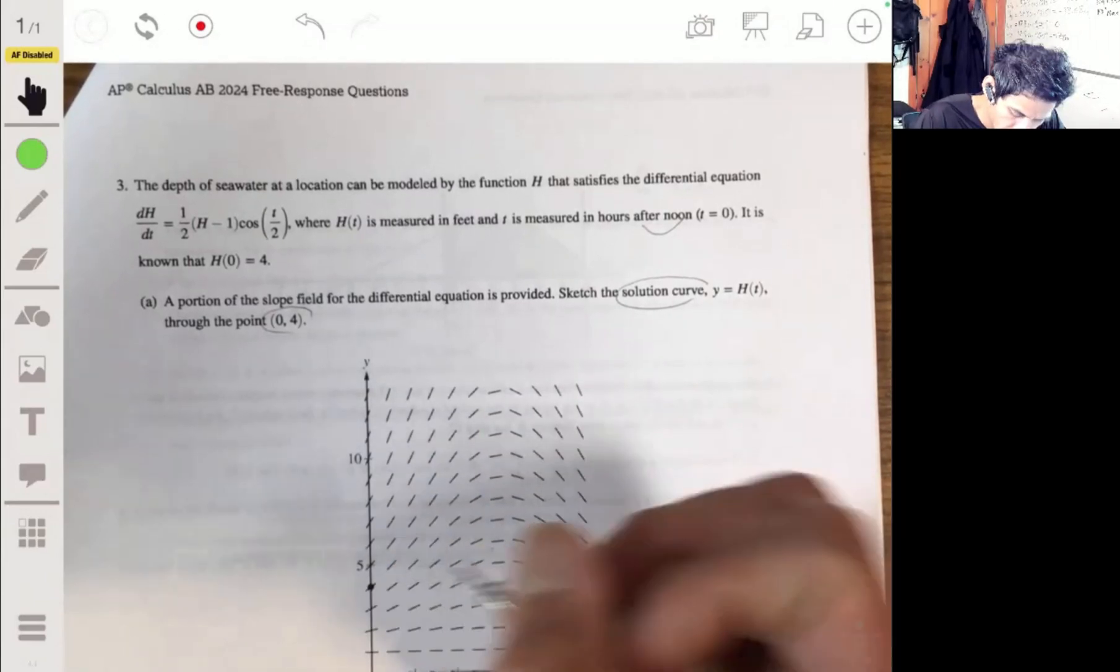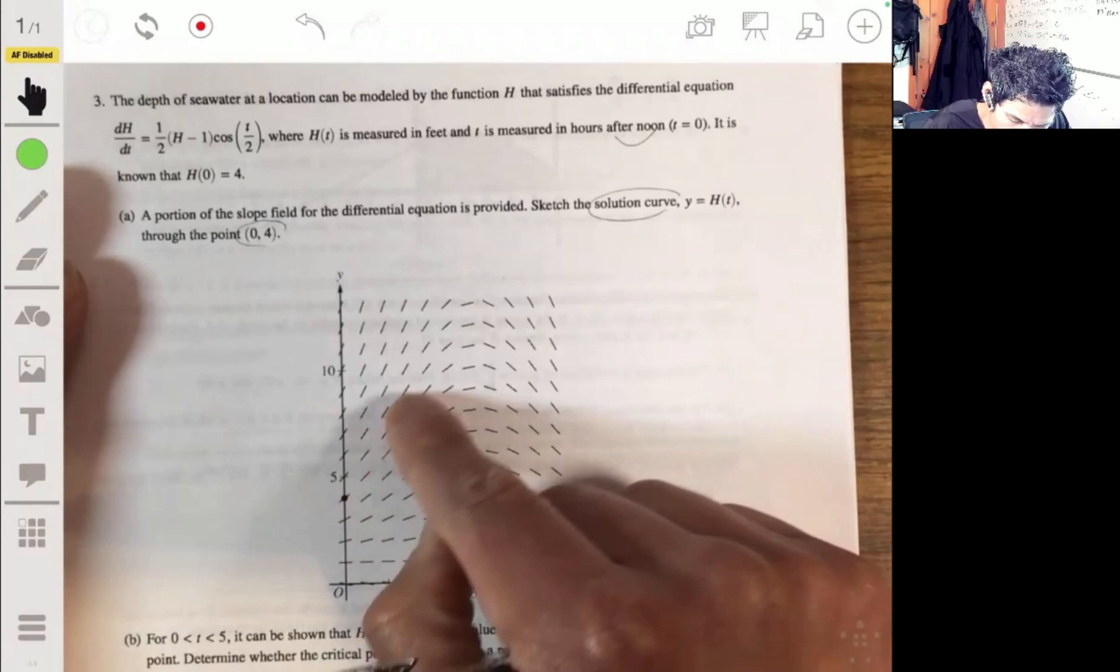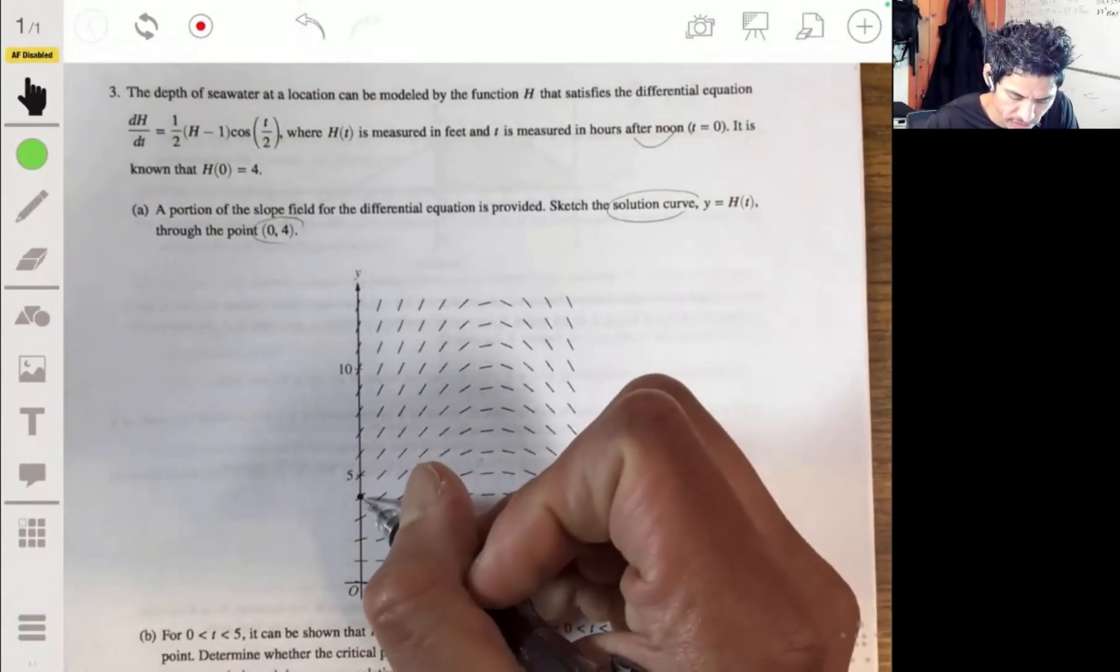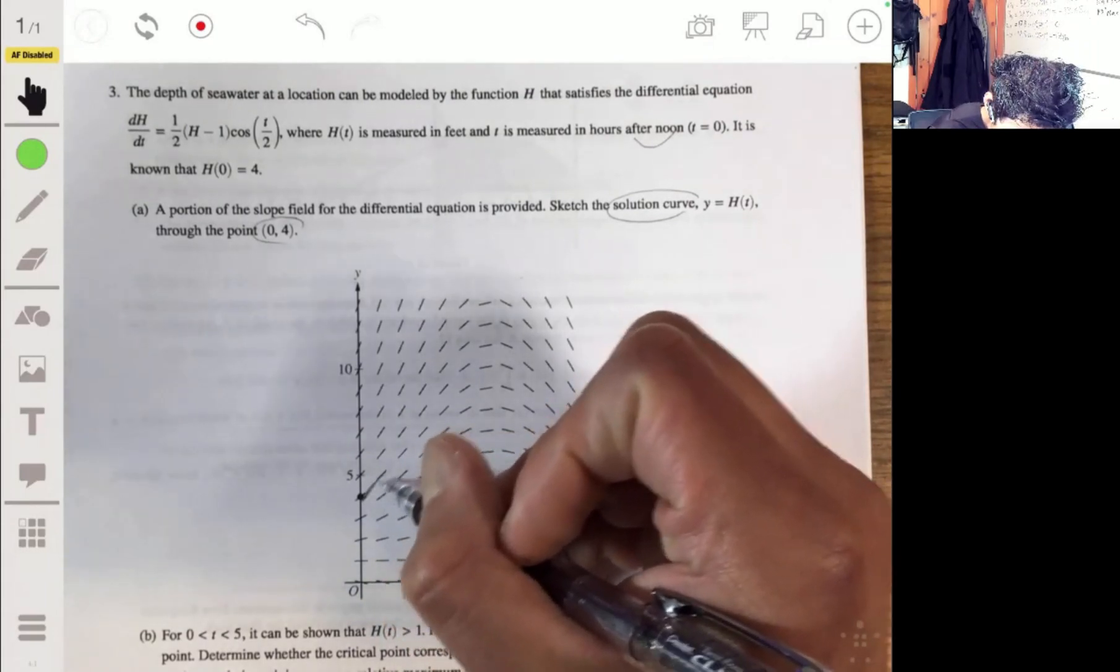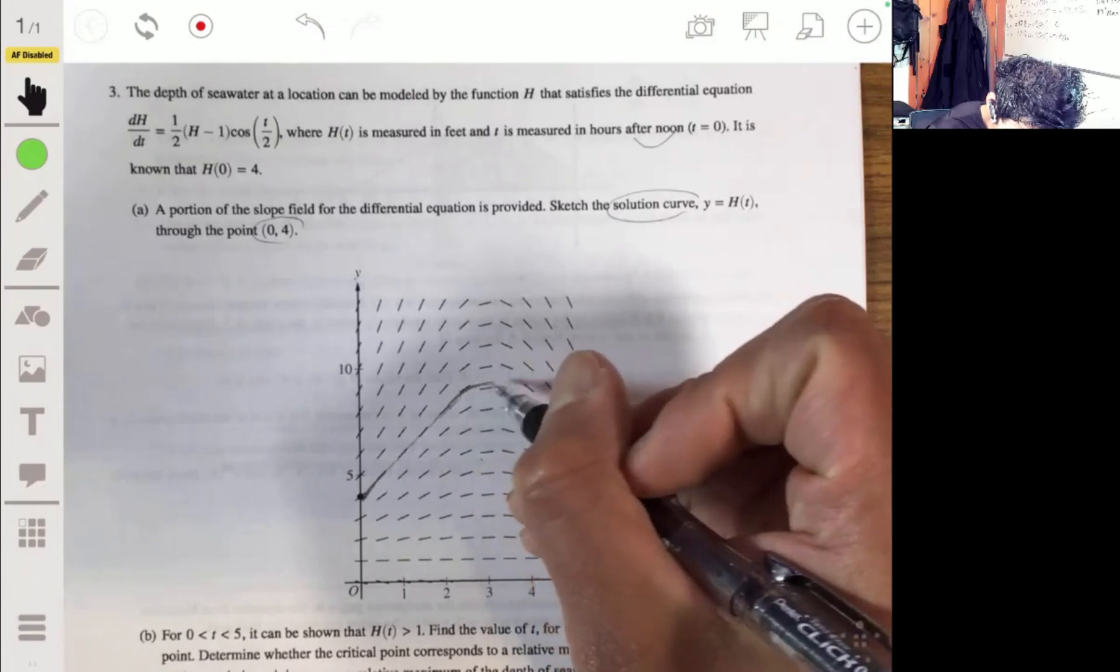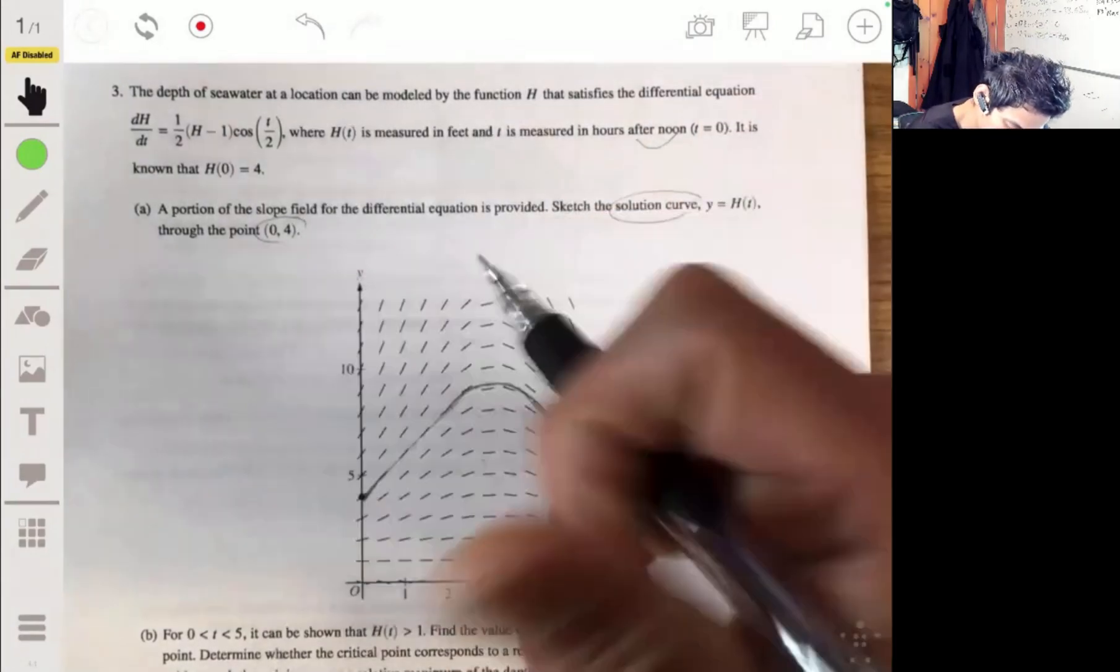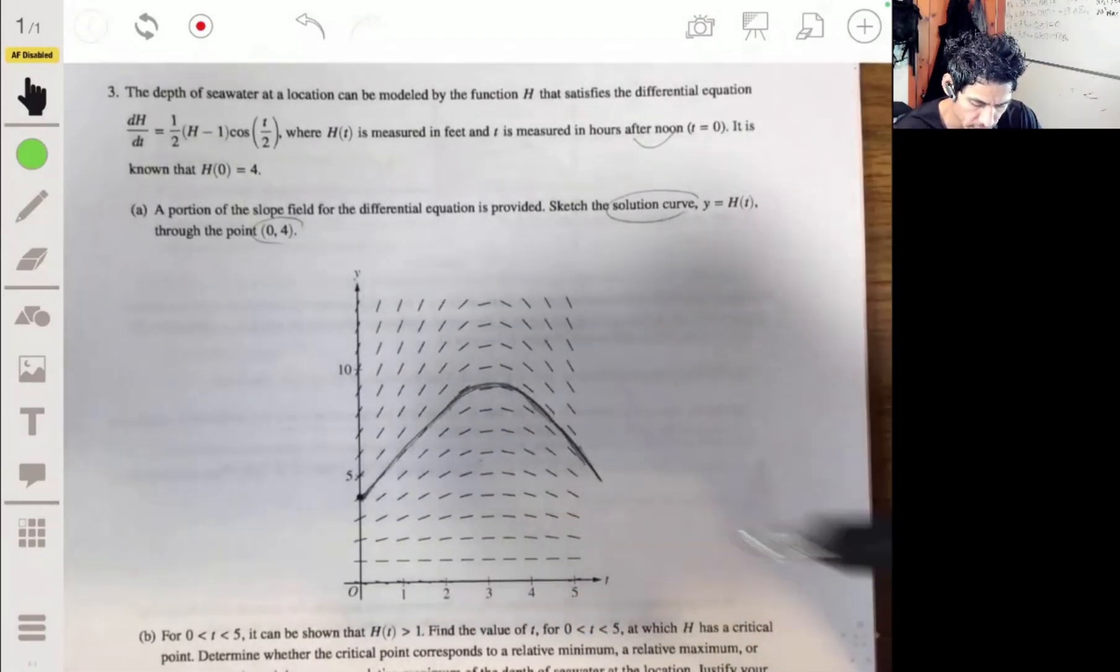So they have the point 0, 4 here. So this is pretty simple as long as you don't overthink it. Because what a slope field is, it's showing you basically like what the curve is doing, what the solution curve is doing along a certain path. So here we would just follow along these line segments and it would be looking something like this. All right, that's it for that part.